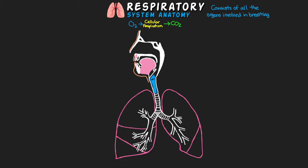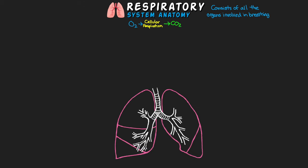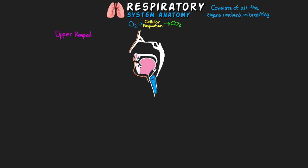There are several components that make up this respiratory system pathway, and we can divide them into two different tracts: the upper respiratory tract and the lower respiratory tract. The upper respiratory tract consists of parts above the sternal angle — essentially outside of our thorax — and at or above the level of the vocal cords, so above our cricoid cartilage. This upper part aids in the passage of air and helps to moisten and warm air before it reaches our lungs.